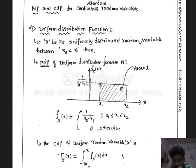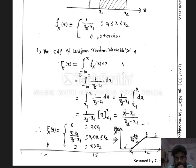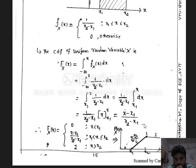The CDF of the uniform random variable x can be determined using the general relationship between the PDF and CDF. The CDF is given by the integral of the PDF function from minus infinity to x. For the uniform random variable, which exists from x1 up to x2, solving this integral gives the CDF value as (x minus x1) divided by (x2 minus x1) when x is between x1 and x2.